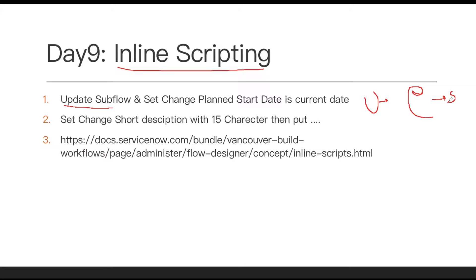The second thing we are going to do is set the short description of the change from an input parameter, but we are going to take only 15 characters. If somebody passes more than 15 characters, we'll put three dots after the 15th character. That might be a requirement we received from our client. In that case we are going to implement inline scripting because that is not possible via a transform function or any simple approach. That is what we are going to build in today's session.